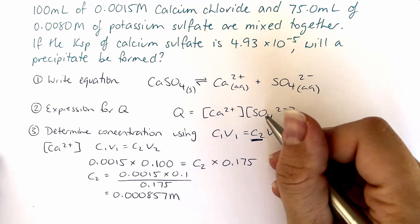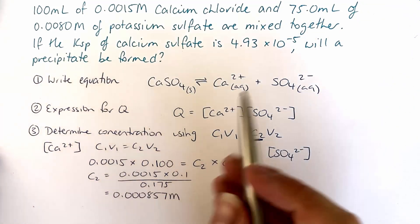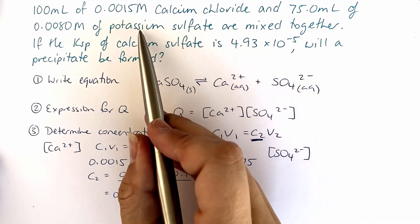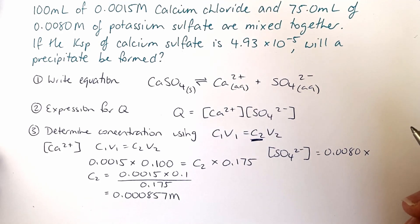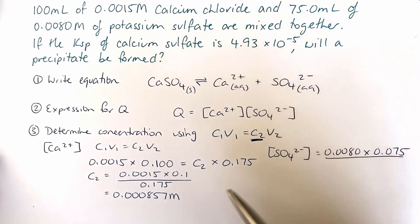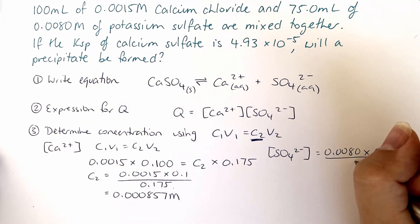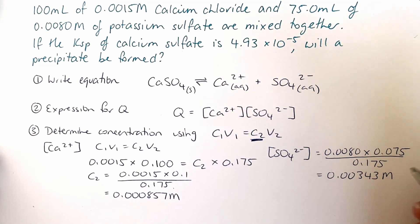Let's do the same thing for our sulfate ions. So our C₁, our initial concentration of the sulfate ions is 0.008 times the initial volume which is the 75 mL, divided by the final volume which is going to be the same for both of them, so that's the 0.175. And that gives us our concentration of 0.00343 molar.